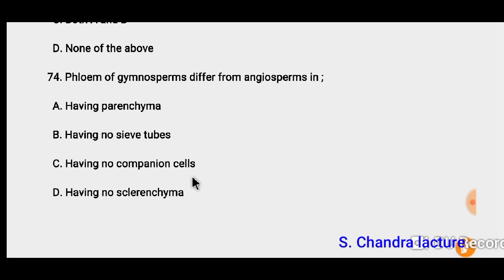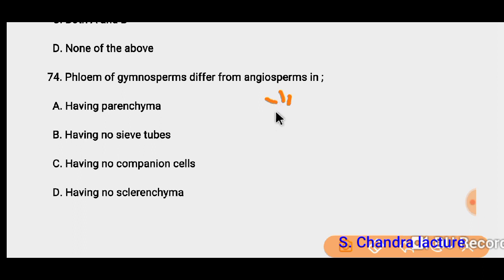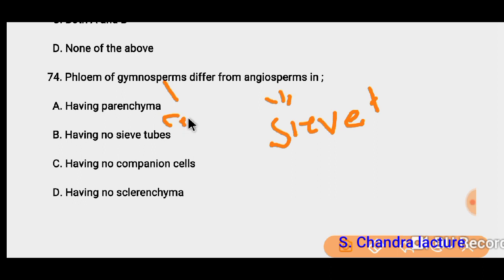Question 74: Phloem of gymnosperms differs from angiosperms in that angiosperms have sieve tubes present in their phloem, while gymnosperms have sieve cells. This sieve tube vs. sieve cell is a common difference. So the correct answer must be 'having no sieve tubes'.